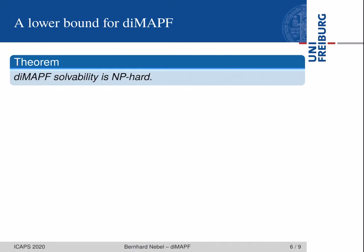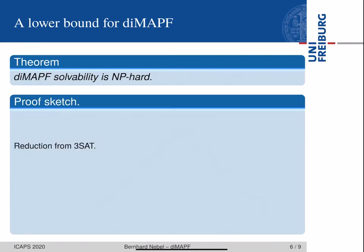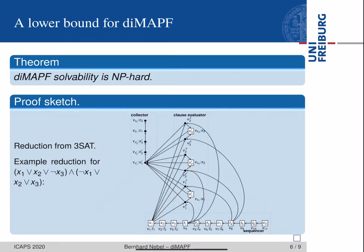This is the key for proving that DIMAPF solvability is NP-hard. As usual, to prove that, you use a reduction — in this case from 3-SAT. Here I show an example reduction for a small 3-SAT formula. The idea is that if this formula is satisfiable, then you can find a plan; and the other way around, if you can find a plan, then you have found a satisfying assignment. We won't go into any details here.